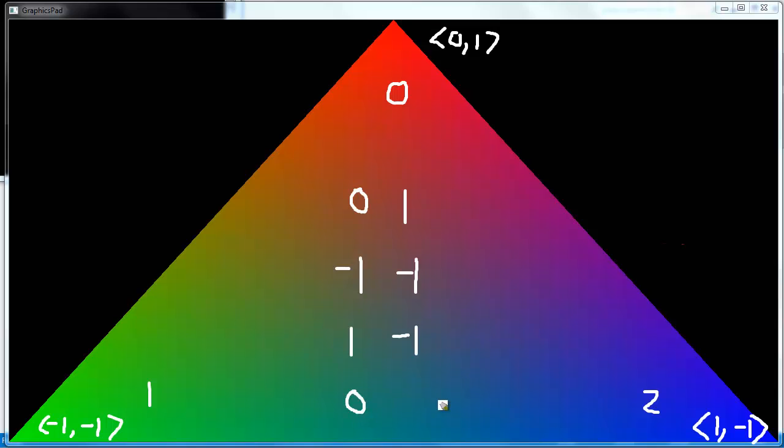So that will be 0, 1. You can imagine we walk from 0, 1 to negative 1, 1, 0, 1, negative 1, 1. Then we go from negative 1, 1 to 1, negative 1, negative 1, 1 to 1, negative 1. And then we go back from 1, negative 1 to 0, 1. And so here are all of our vertices.